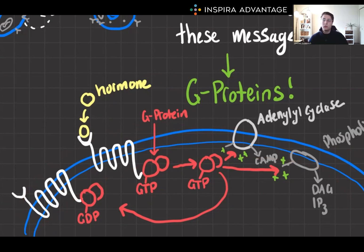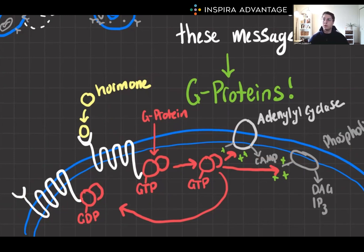One of the proteins that does this quite often is called a G-protein. G-proteins are central to many signaling pathways, and they're named after their guanosine triphosphate, or GTP, as an energy source. They act as intermediaries, transferring the message from the outside of the cell to the inside of the cell. Think of G-proteins as a cellular middleman, ensuring that the signal actually gets through.